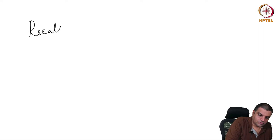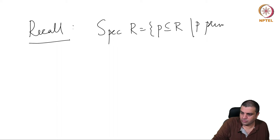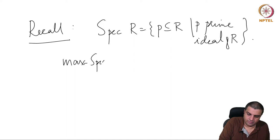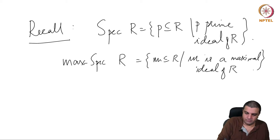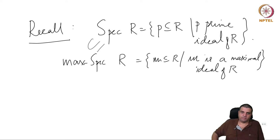Recall we defined the set of prime ideals, and we can also define what is called the max spec of R, which is the set of maximal ideals. Every maximal ideal is a prime ideal. We would like to give a topology to spec R, and whenever we talk about a topology of max spec, we mean the induced subspace topology.